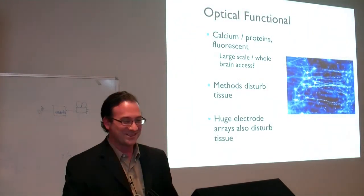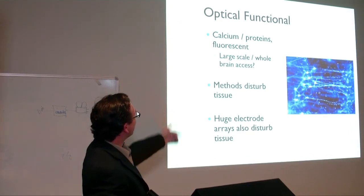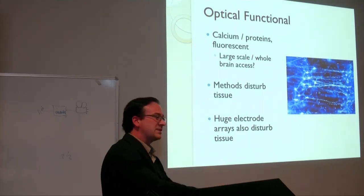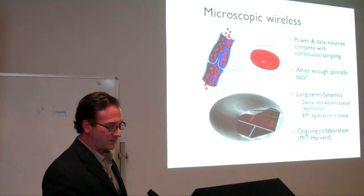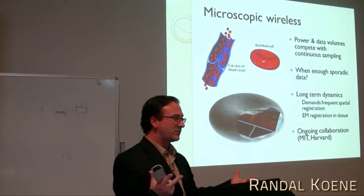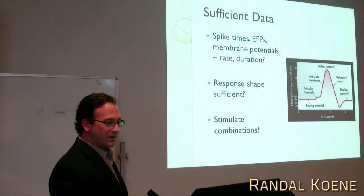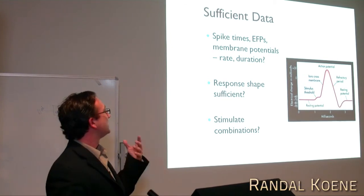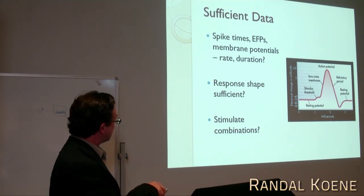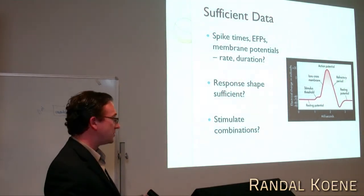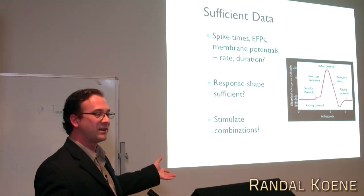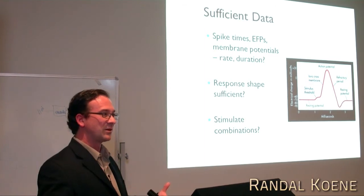Other methods, such as optical fluorescent imaging, also disturb the system — you need to install viewing windows or devices inside the brain. Microscopic wireless devices face power and data volume issues, meaning you may only sample sporadically in some places. A key open question is: when do you have enough data — enough spike times, electric field potentials, and so on — to produce a reliable system? Should you stimulate as well, to run the system through its paces? But stimulating also affects the system; it probably changes as you're doing the observation.